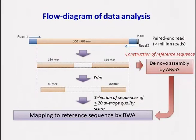Sequencing is performed on an Illumina MiSeq sequencer. This is a flow diagram of sequence data analysis. We obtain more than a million sequence data as paired-end reads. First, we construct a consensus reference sequence using a program called ABIS. Then we trim both ends of sequences up to 80 bases, select sequences of high-quality score, and map all the sequence data to the reference sequence by BWA. These programs are available from websites as free software.